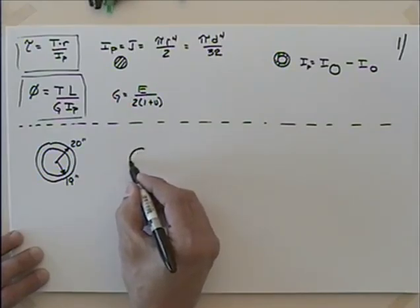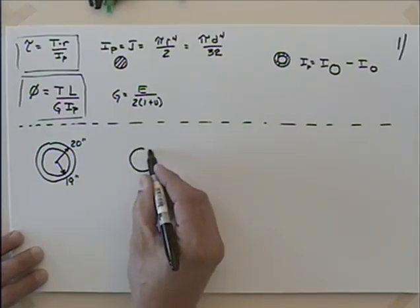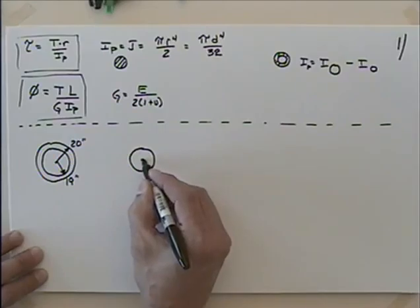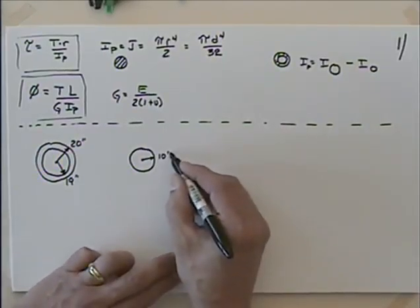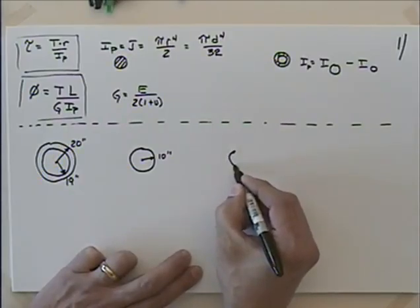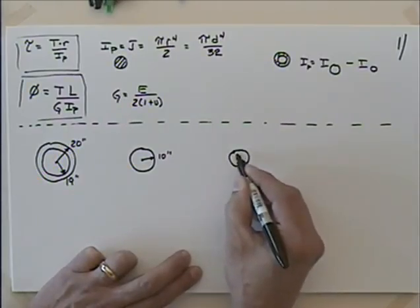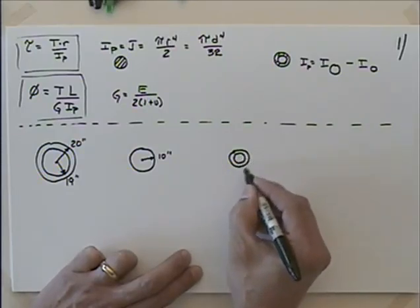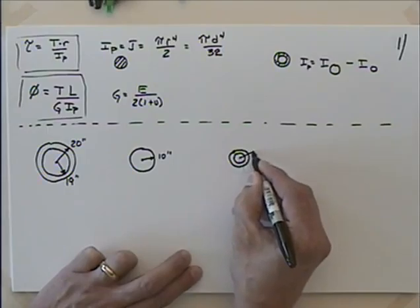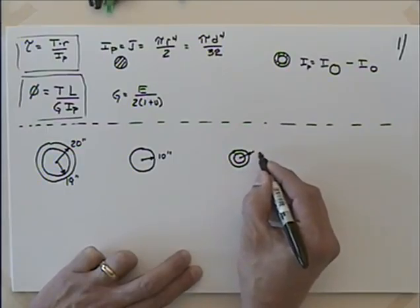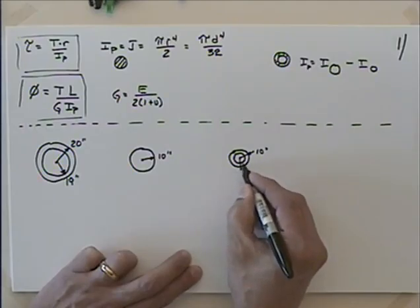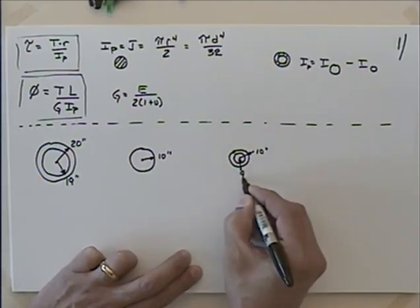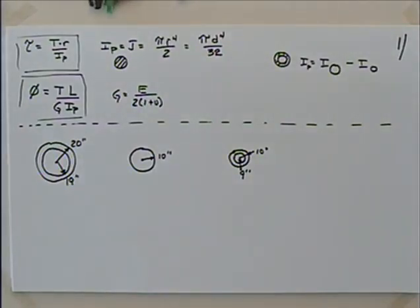The first case is a large hollow shaft with an outside radius of 20 inches and an inside radius of 19 inches. The second case is a solid shaft with a radius of 10 inches. Finally, we take that same solid shaft and hollow it out — an outside radius of 10 inches and an inside radius of 9 inches.